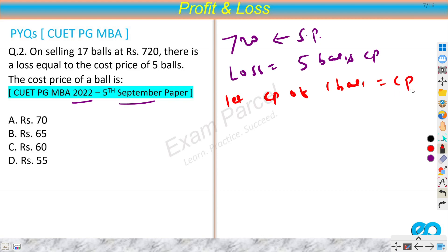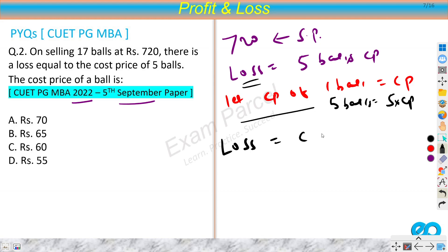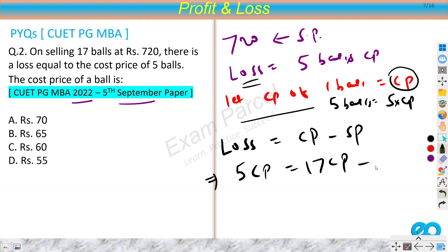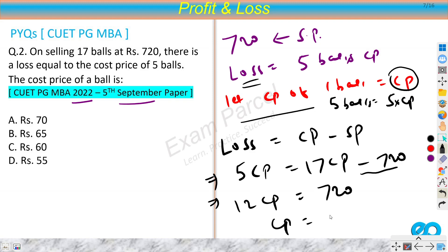Let the cost price of 1 ball be CP. For 17 balls the cost price is 17CP, and the loss equals the cost price of 5 balls, which is 5CP. Since loss = cost price − selling price, we write: 5CP = 17CP − 720. Taking 5CP to the right-hand side: 12CP = 720, so CP = 720/12 = 60.